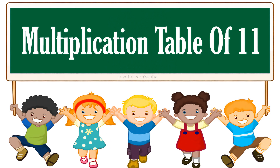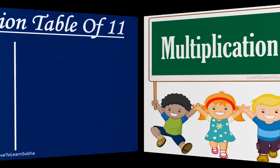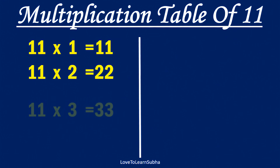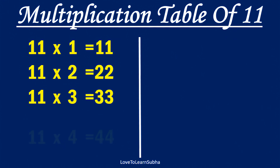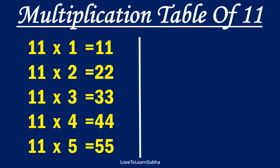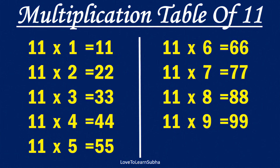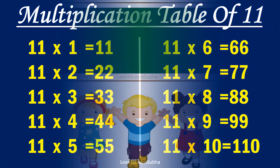Multiplication table of 11. 11×1 is 11, 11×2 is 22, 11×3 is 33, 11×4 is 44, 11×5 is 55, 11×6 is 66, 11×7 is 77, 11×8 is 88, 11×9 is 99, 11×10 is 110.